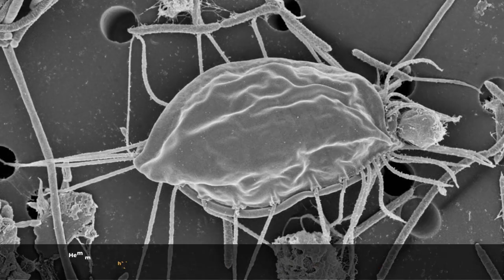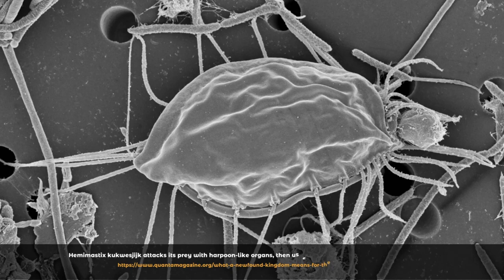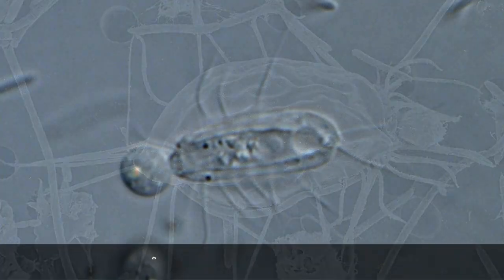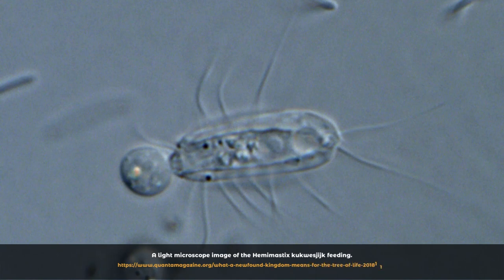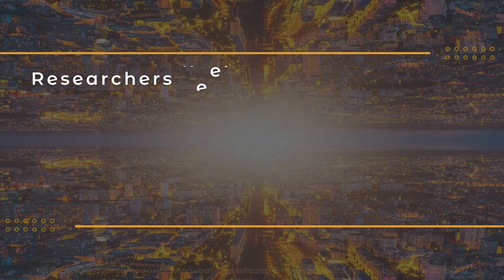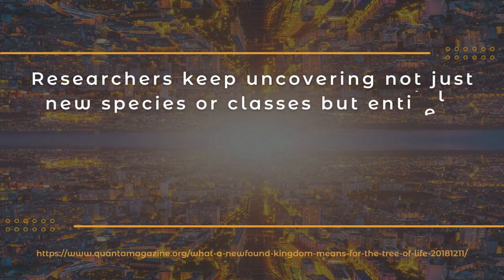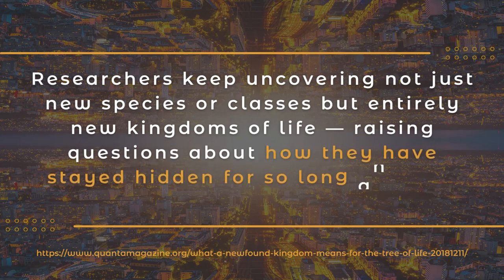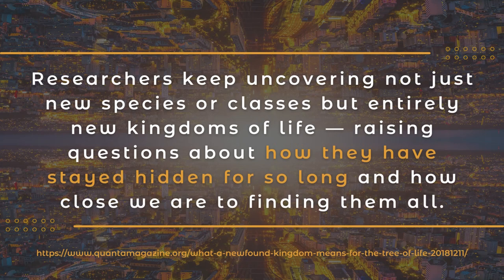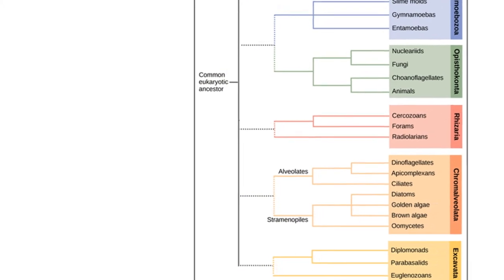It's the sort of result you hope to see once in a career, said Alistair Simpson, a microbiologist at Dalhousie University who led the study. Impressive as this finding about hemimastigotes is on its own, what matters more is that it's just the latest and most profound of a quietly and steadily growing number of major taxonomic additions. Researchers keep uncovering not just new species or classes, but entirely new kingdoms of life, raising questions about how they have stayed hidden for so long and how close we are to finding them all.